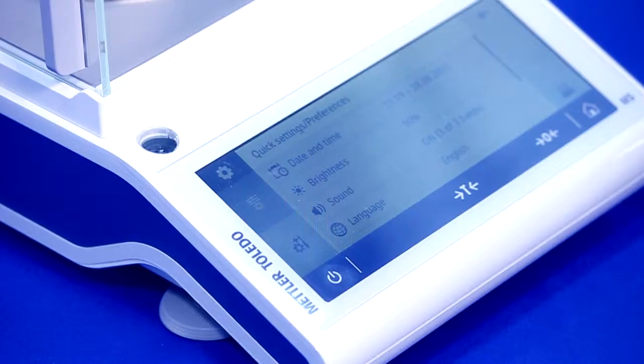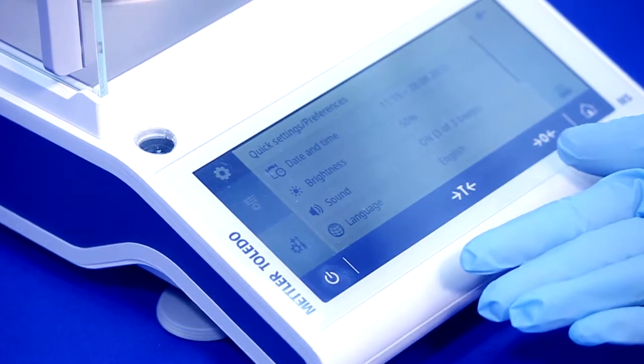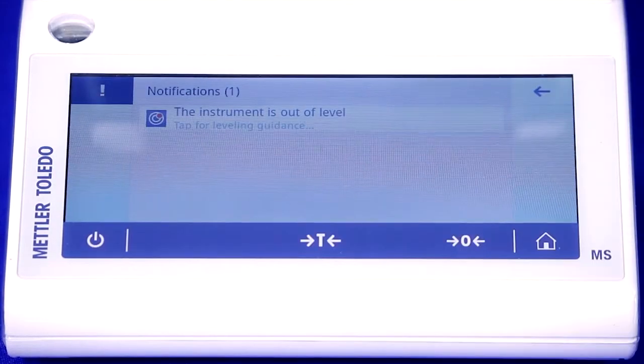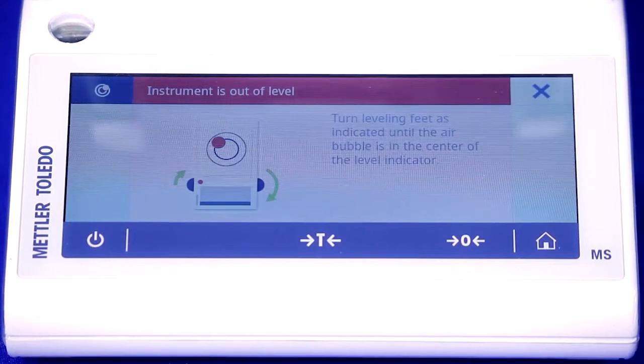There are several on-screen guidance features that allow any operator to get accurate results. For instance, if the balance falls out of level, level control notifies you immediately and guides you through the leveling process.